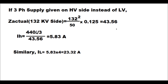Instead of giving supply on the LV side, supply can also be given on the HV side. However, in that case Z_actual comes to 43.56 ohms, the supply current on the HV side will be only 5.83 amperes and on the LV side 23.32 amperes. The secondary currents for HV and LV will be lower. Therefore it is recommended that for the stability test, supply always be given from the LV side so that the current is higher, enabling more accurate measurement of secondary currents.